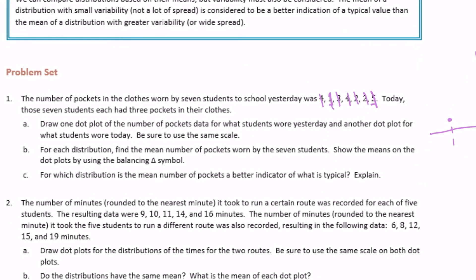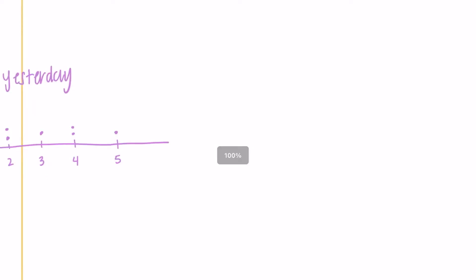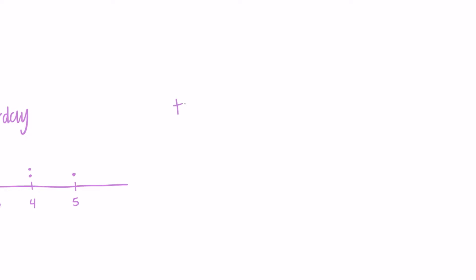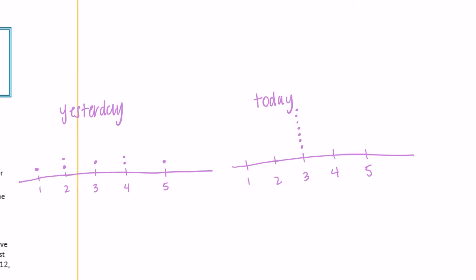Now draw a dot plot for what students wore today. Today those seven students each had three pockets. It wants us to use the same scale for both, so one through five. Today there were seven students and they all had three pockets, so put seven dots on three. Those are our two dot plots. Label it: number of pockets.